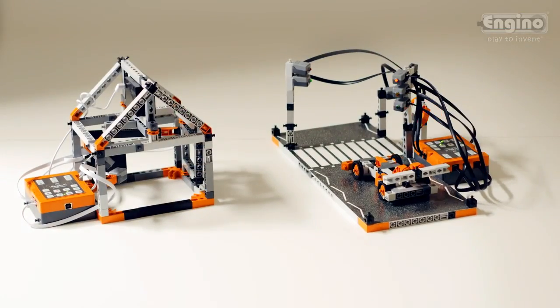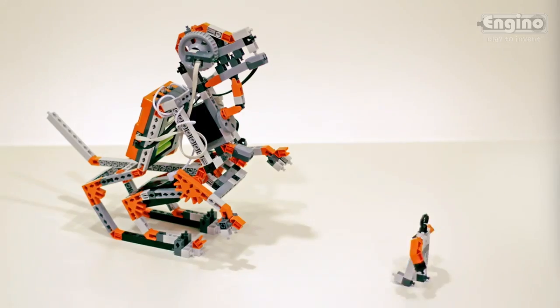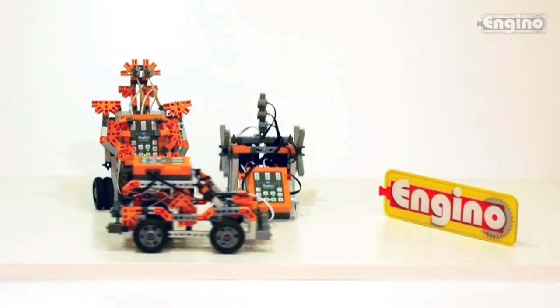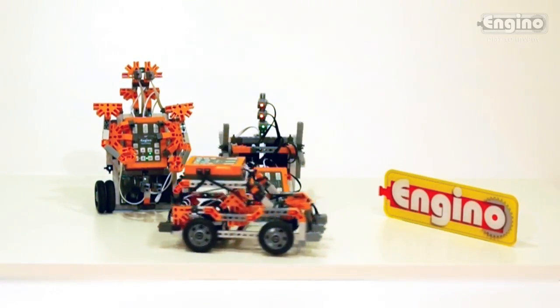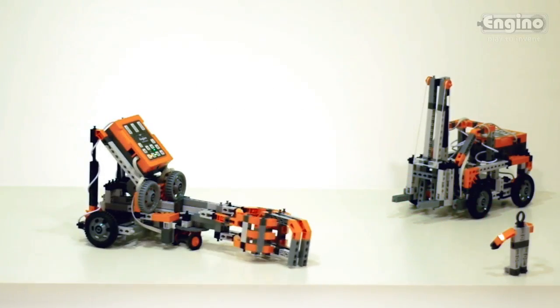Program the pedestrian crossing so that the Engino figure crosses the road safely. Try not to wake up the Dinobot, though, because it might get angry. Watch how infrared sensors on the humanoid and the platform detect the presence of the Jeep, while it avoids obstacles using the front-touch sensor.